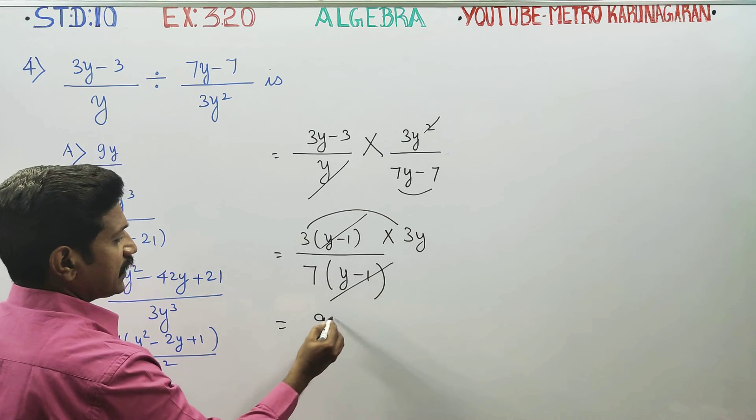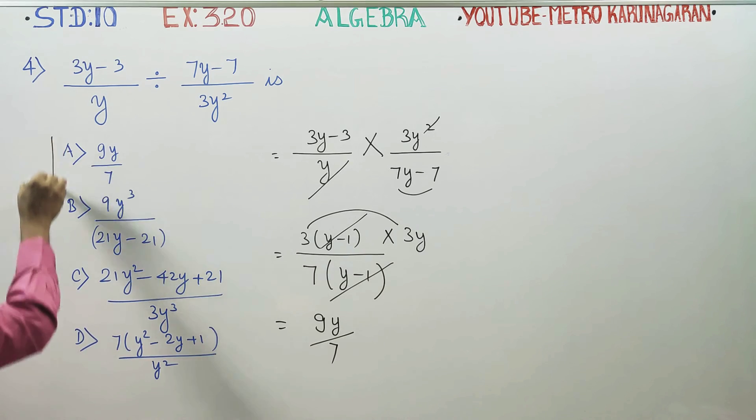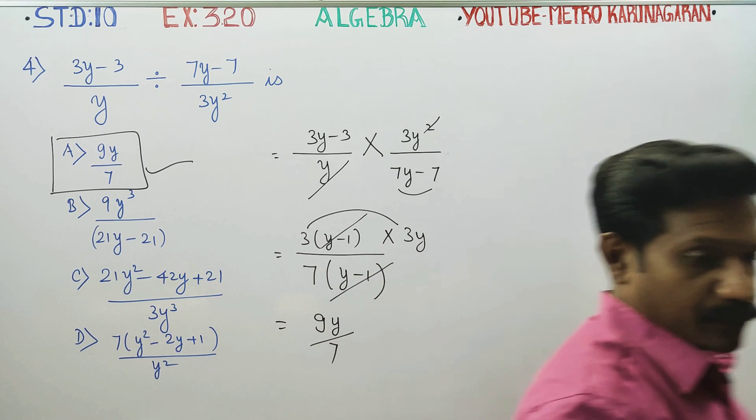3 times 3 is 9y by 7. This is the final answer. Option A is the best answer for this sum. Thank you.